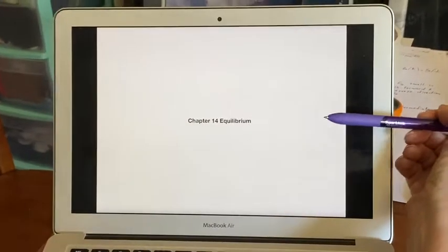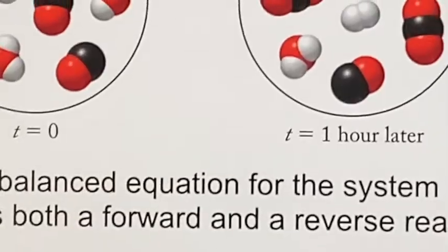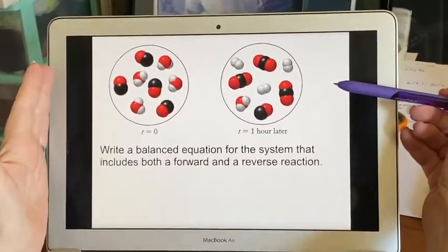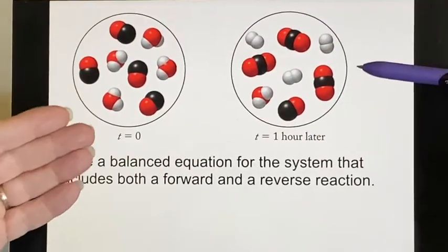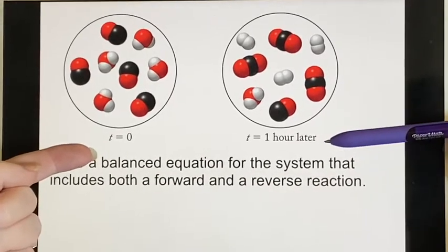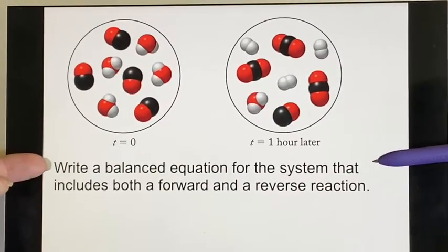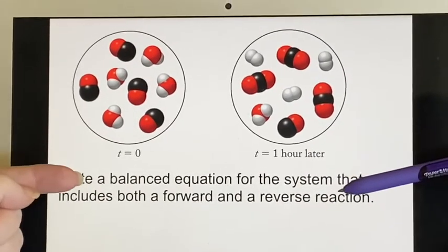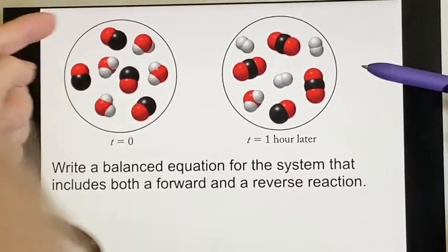So we move on to Chapter 14 on equilibrium. First of all, let's talk about what's going on between these two pictures. This happens at t equals zero and this is an hour later. They want a balanced equation for the system that includes both a forward and a reverse reaction.